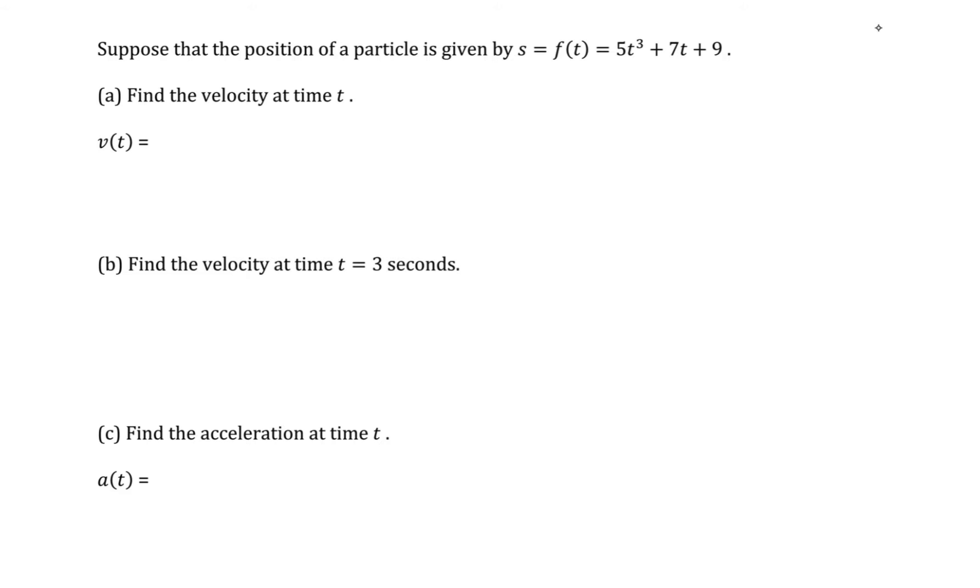So the rule here is velocity is defined as the first derivative of position. There's not really much you need to know about how those relationships actually work. You'll learn that in a physics course. Here, we just need to know that rule. So the velocity is the first derivative of position, which would be 15t squared plus 7.